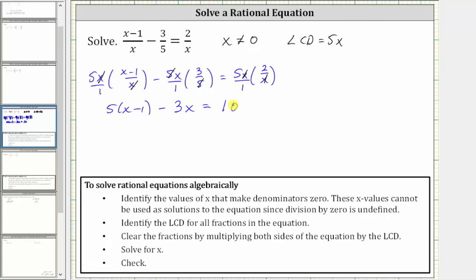And now we solve the resulting equation, which means the next step is to clear the parentheses here, by distributing five, which gives us 5x minus 5 minus 3x equals 10.